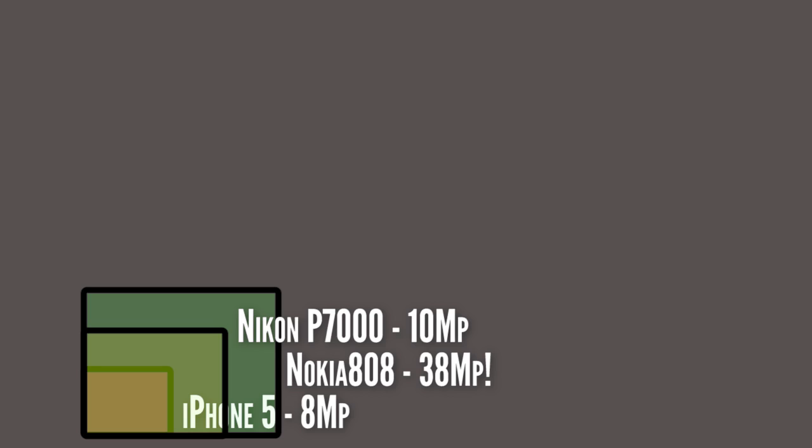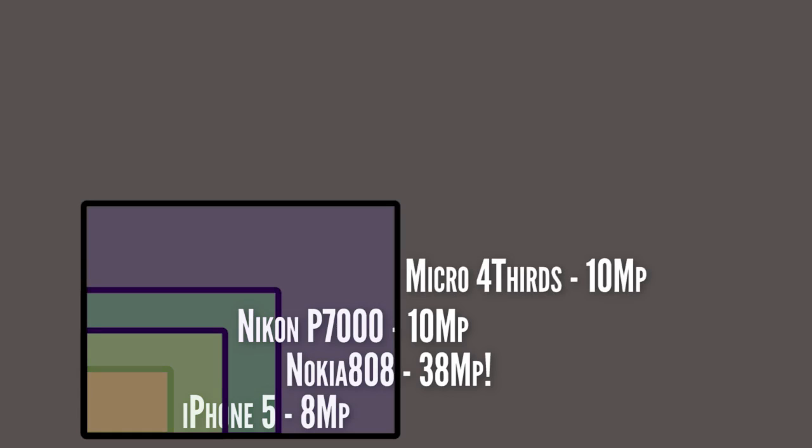Then you go up into the micro four thirds cameras. They are four thirds of an inch, the sensor, and they jump up to like 17.3 by 13 millimeters. So now we're looking at almost four times the light gathering ability there.